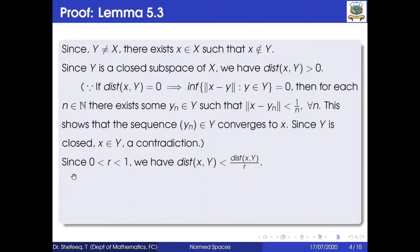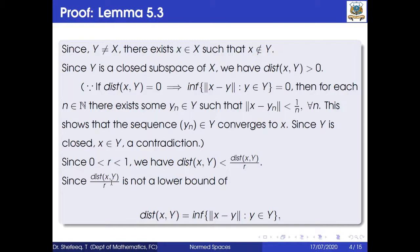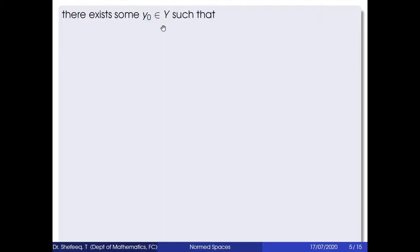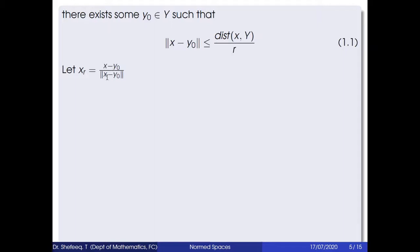Now since r lies in (0, 1), we have dist(x, Y) < dist(x, Y)/r. Since dist(x, Y)/r is not a lower bound of the set {‖x − y‖ : y ∈ Y}, there exists some y₀ in Y such that ‖x − y₀‖ ≤ dist(x, Y)/r. We use this relation later. Now let x_r = (x − y₀) / ‖x − y₀‖.